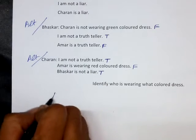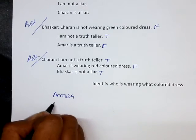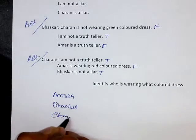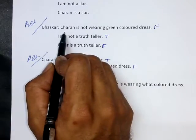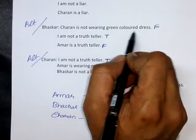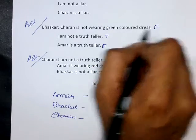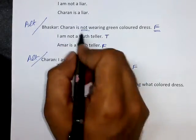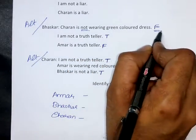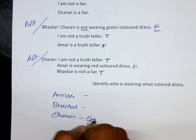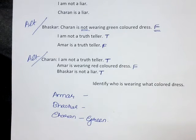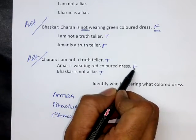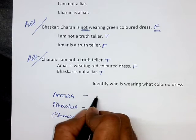Now let us analyze the statements made by Bhaskar as well as Charan. The three people involved are Amar, Bhaskar, and Charan. Bhaskar says 'Charan is not wearing a green colored dress,' and that statement is false. False with double negation makes it positive — which means 'Charan is not wearing a green colored dress' is false, meaning Charan will be wearing a green colored dress.